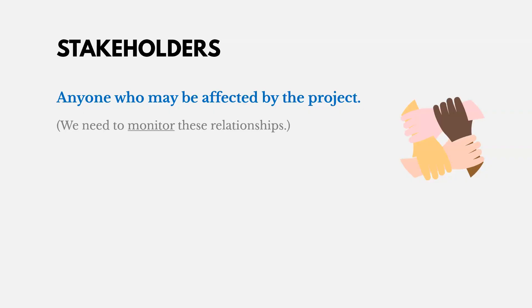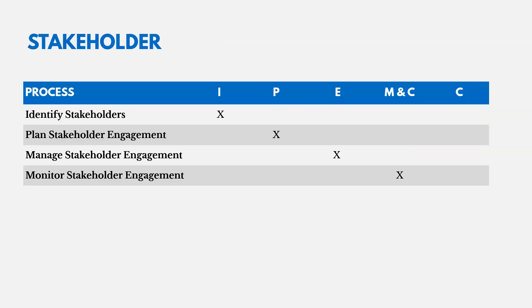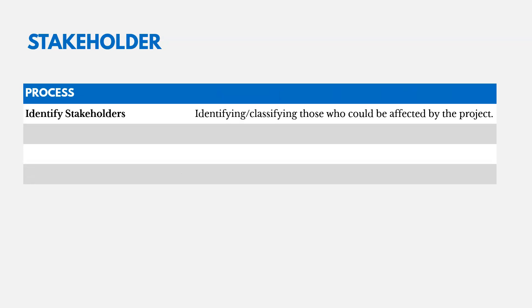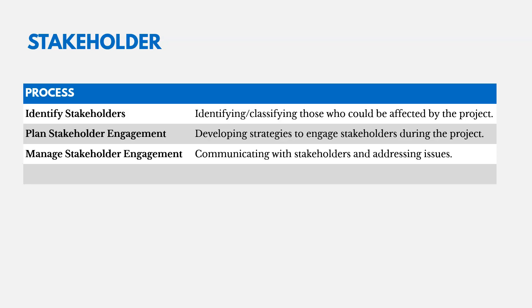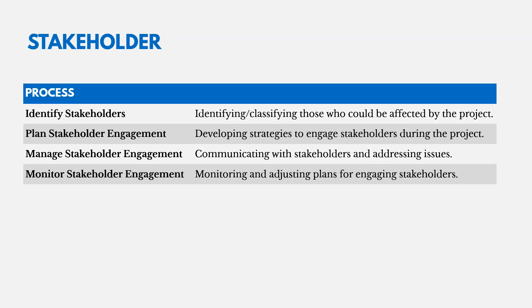The final knowledge area is stakeholder engagement. Stakeholders are anyone who may be affected by the project, and we must monitor these relationships because they could help or hurt the project. There are four processes: one in initiating, one in planning, one in executing, and one in monitoring and controlling. We identify stakeholders and classify those affected by the project, plan stakeholder engagement strategies, manage engagement by communicating and addressing issues, and monitor engagement by adjusting plans based on how things are going.